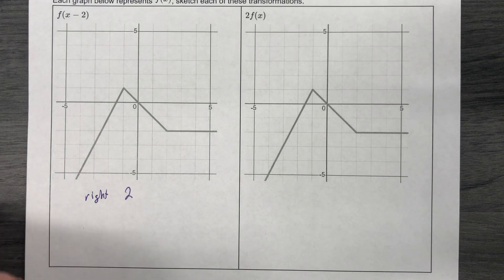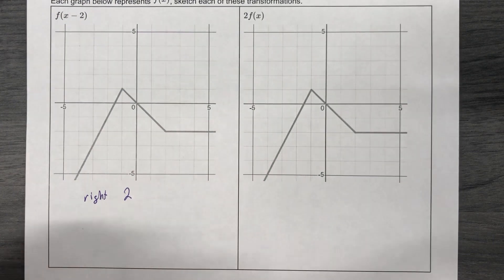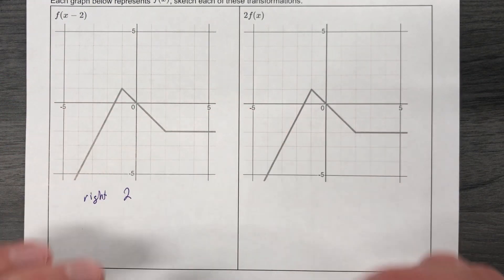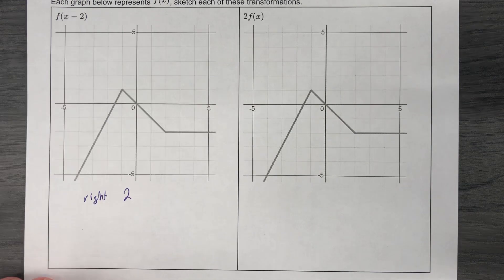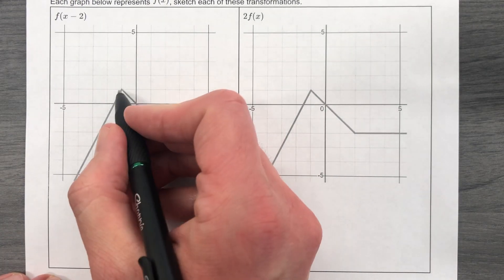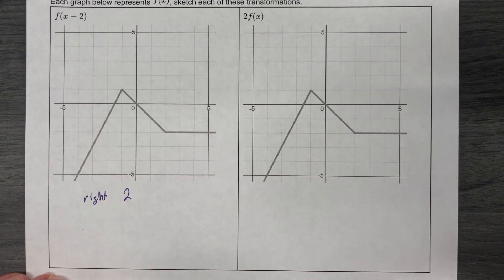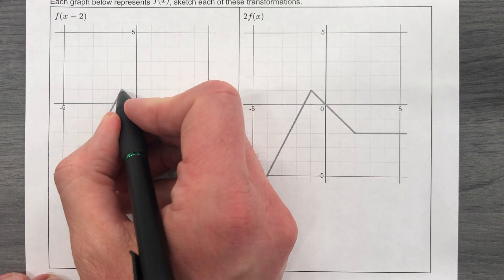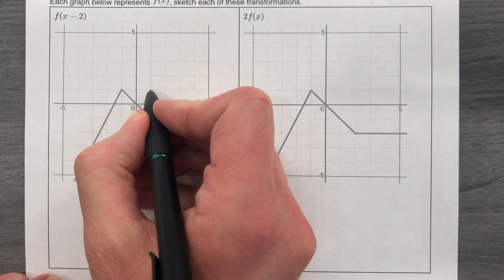So the first one's pretty easy. I'm going to just take this whole graph, and I'm going to shift it to the right 2. I know it says x minus 2, but your x lied to you. So what we're going to do, shift this whole thing to the right 2. I like to pick the obvious points. Like, for example, this peak right here, this maximum, is going to get shifted over 2.